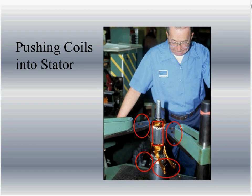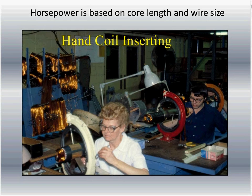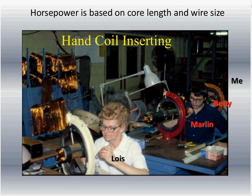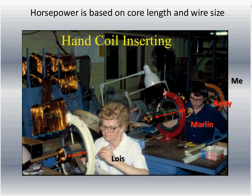I want you to look at a couple things in this picture. Look at the length of Lois' core and then the length of Marlin's core. It's very important to understand: horsepower is based on the core length and the wire size. The more horsepower I want, the longer the core is going to be and the larger the wire. This is why you can only go up to five horsepower in single phase — you can't get wire large enough for seven-and-a-half horsepower into the slot. Also notice that the wheel can turn 360 degrees so you can get to all parts of that motor.